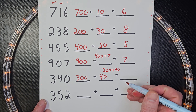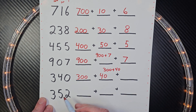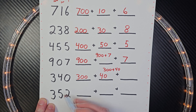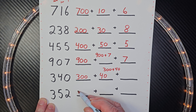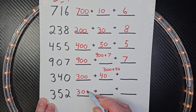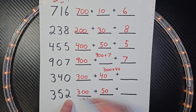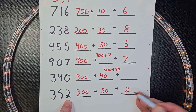All right, we got one more. Let's go ahead and do this. Why don't you say this with me? Three hundred and fifty-two. Three is in the hundreds place, so I put three hundred. Fifty. Two. Just like that.